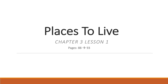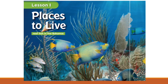This is science week 8 lesson 1 from chapter 3: places to live. There are different kinds of animals and plants, but each animal and plant lives in a different place. In this photo you can see different animals and plants.